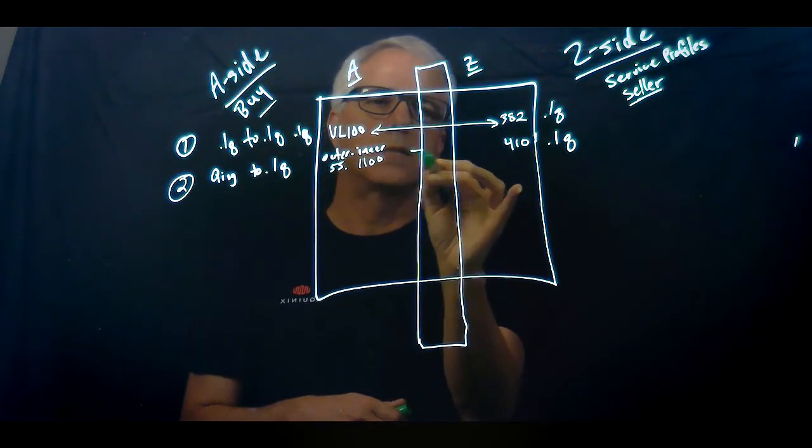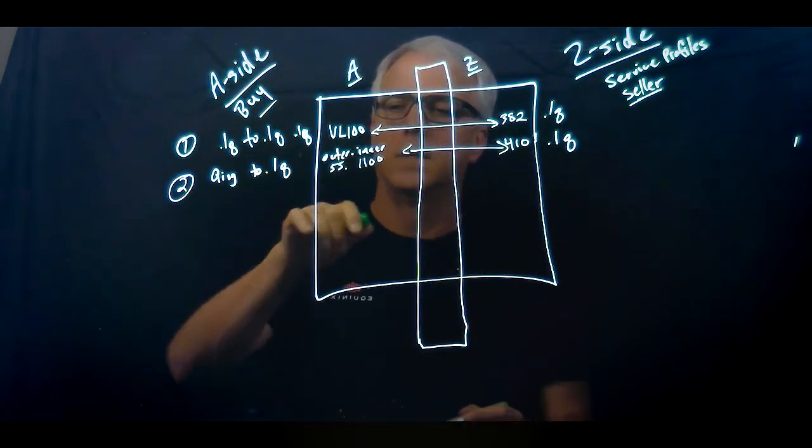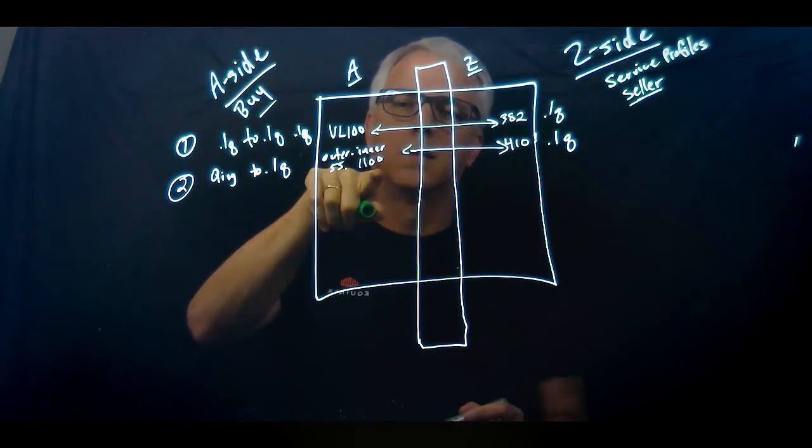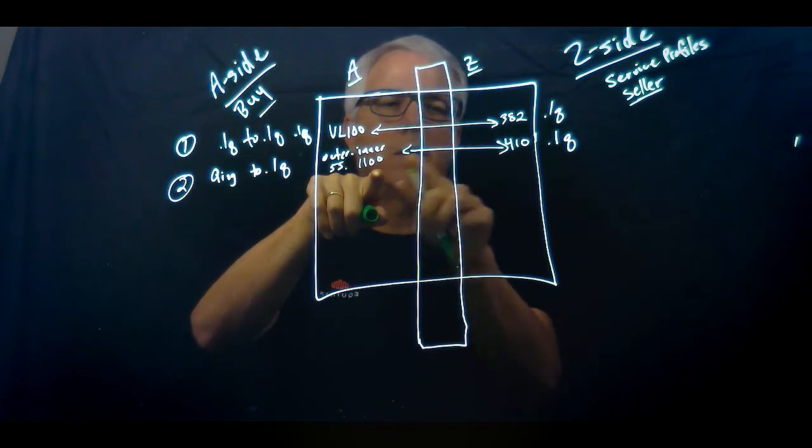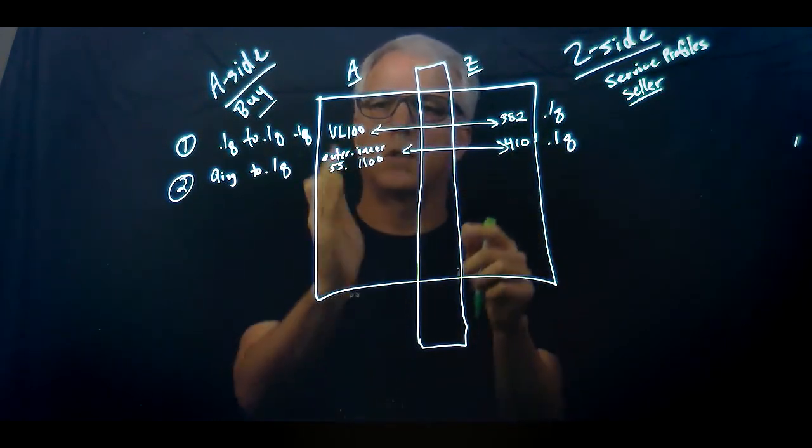The ECX switch is going to see a Q-in-Q frame come in. It's going to strip off the outer tag, VLAN 55, look at the inner tag, which is VLAN 1100, and say I need to translate that VLAN 1100 to VLAN 410. Same thing, same scenario.